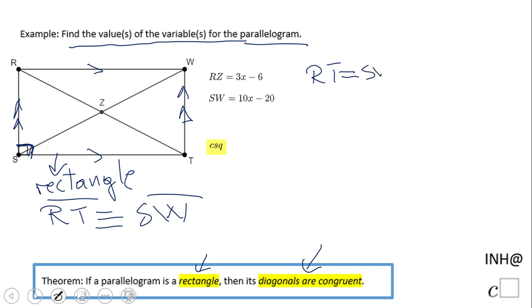If we take a look, SW is given to us. But how much is RT? This segment which is not given to us—these two segments are congruent and each one is 3x minus 6. So obviously RT will be twice 3x minus 6, which will be 6x minus 12.